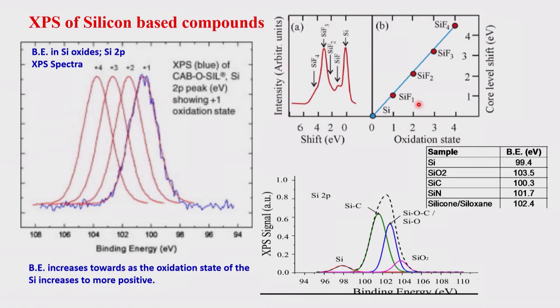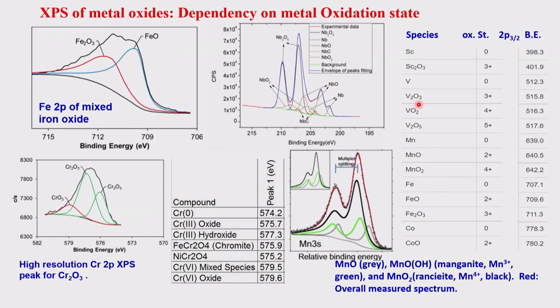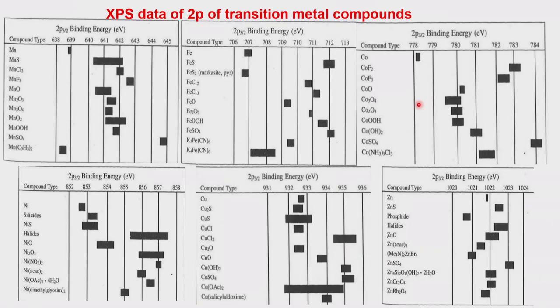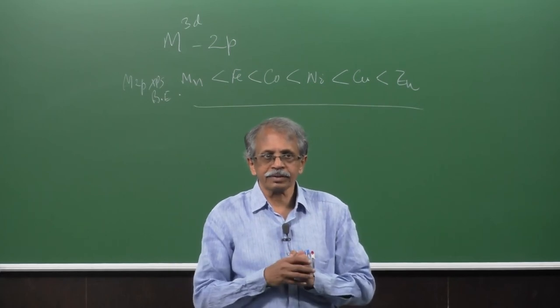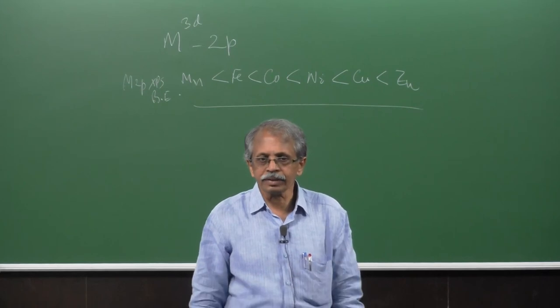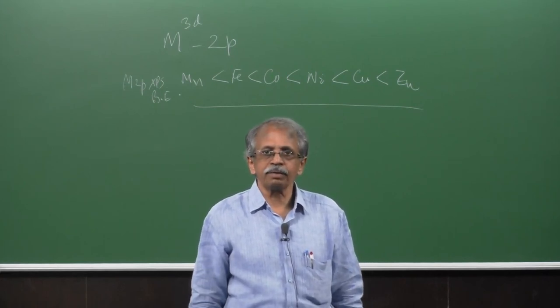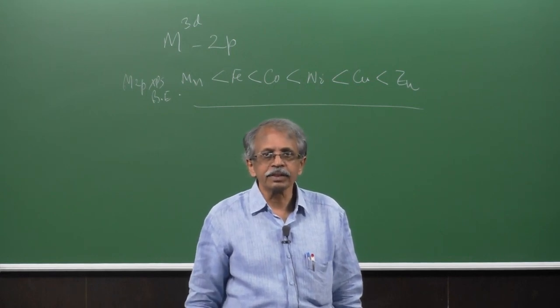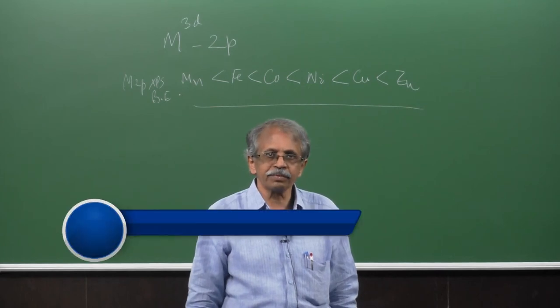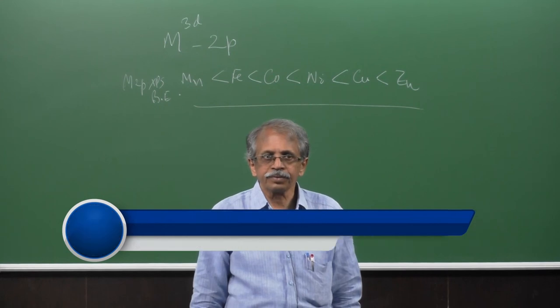Oxygen spectra are generally harder to interpret — only a few extremes can be identified. In today's class we covered inorganic compounds: silicon XPS, various metal oxides, and metal sulfides. In the next class we will look at nanocomposites and heterogeneous catalyst surfaces. The basic principles are simple and clear. Thank you very much.